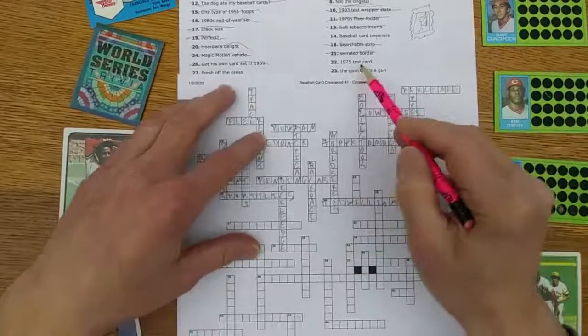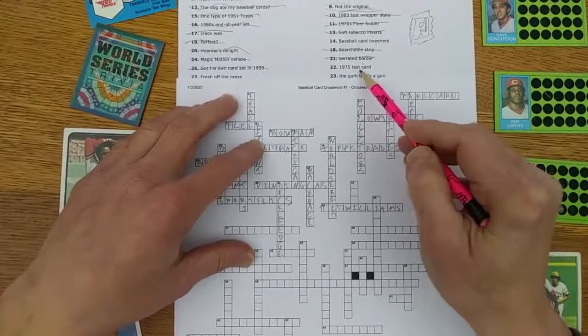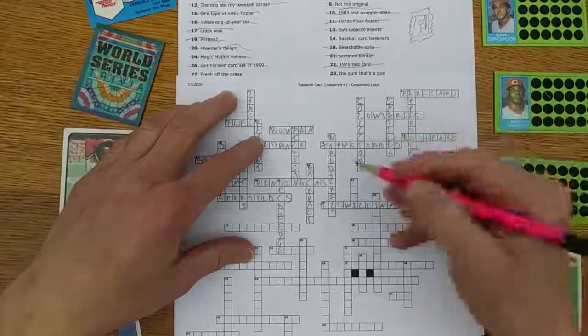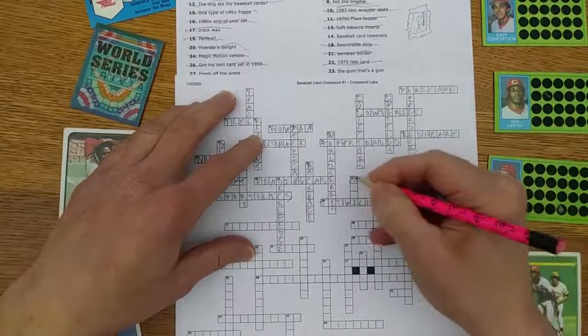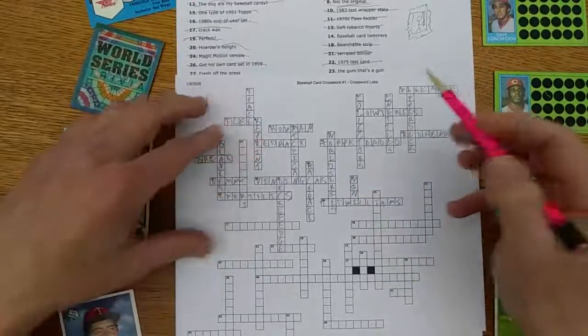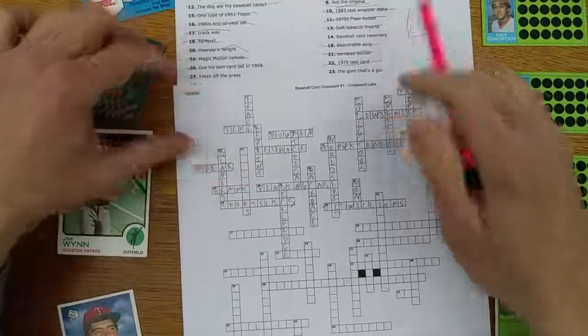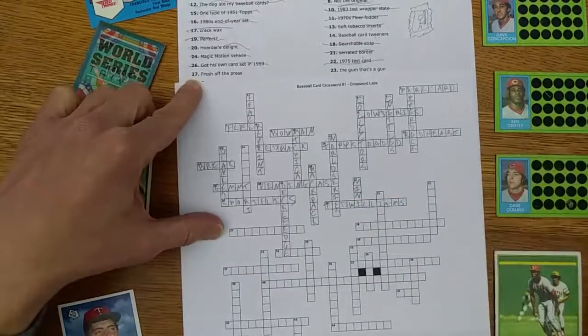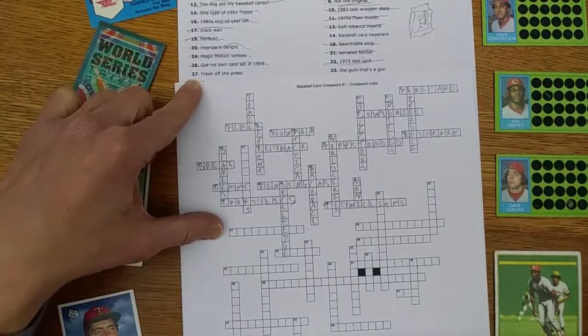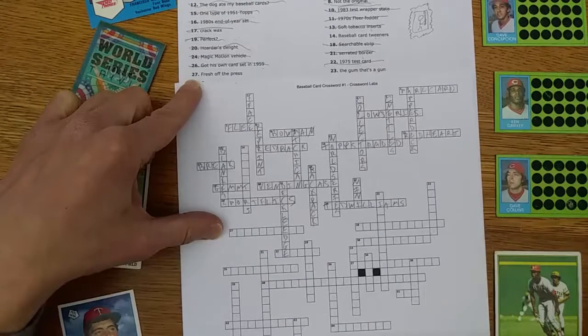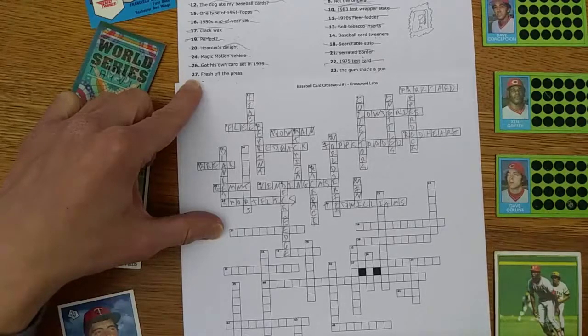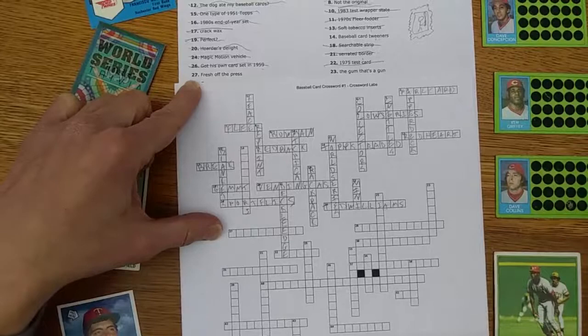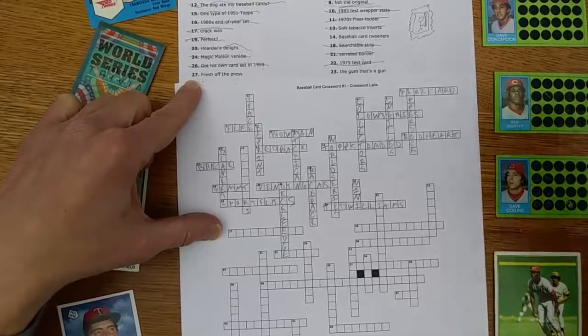1975 test card: We had minis, so I'm going to say that is a mini. Fresh off the press, 27 across. That one's pretty sparse. It's a big long word with not much in the way of help. What was I thinking there? Let's think about that a little bit more.